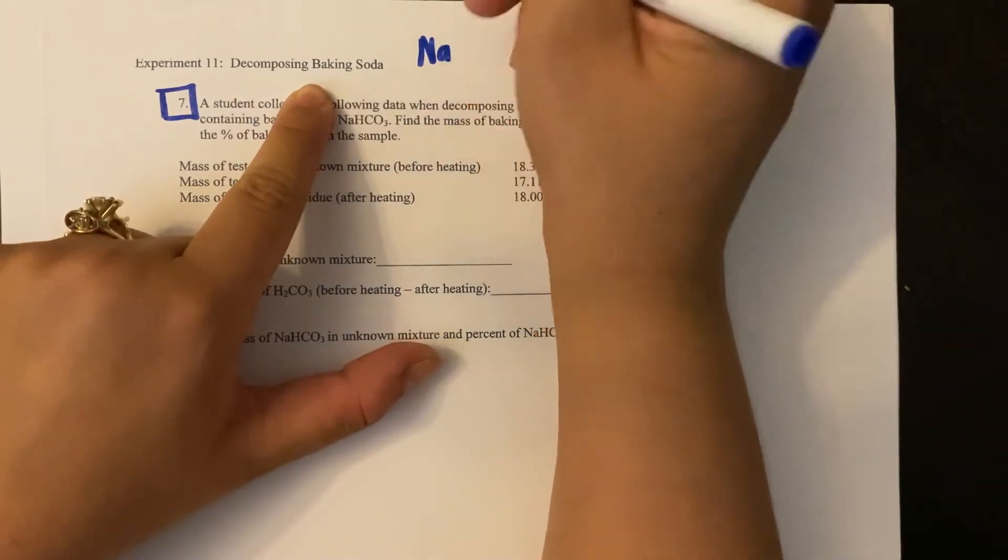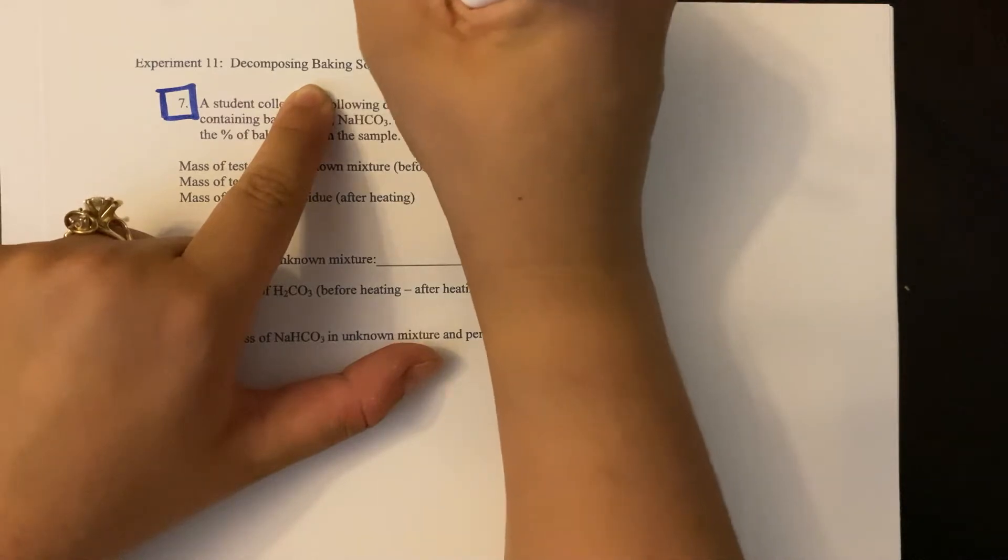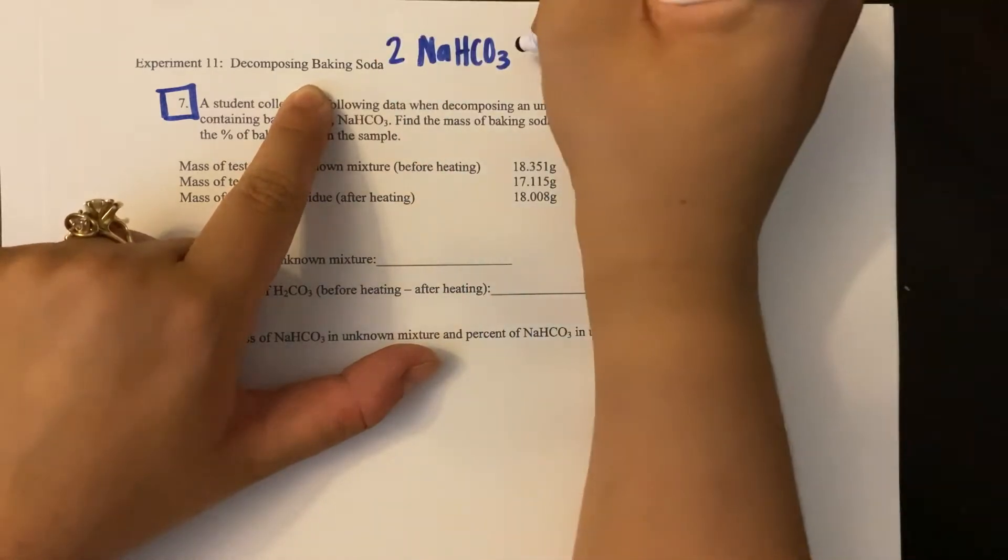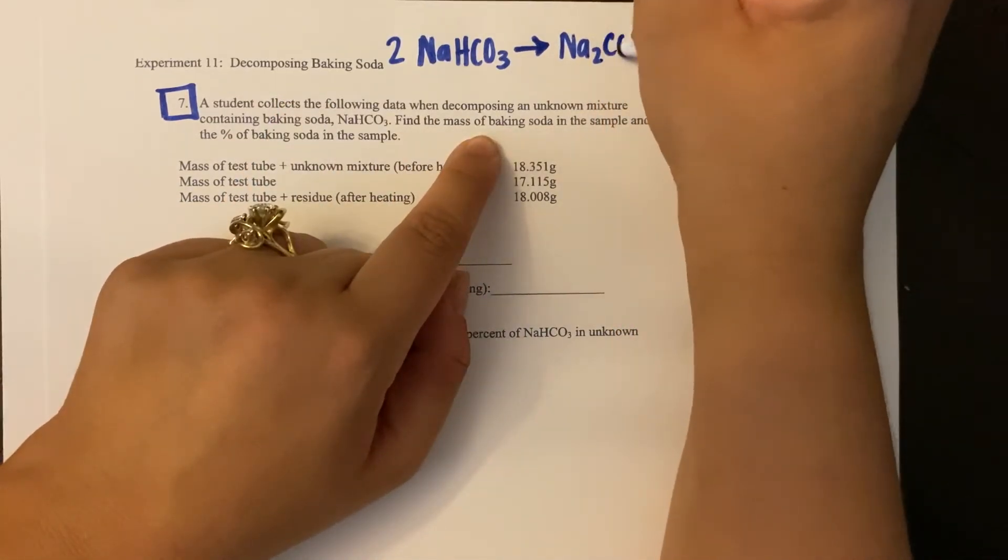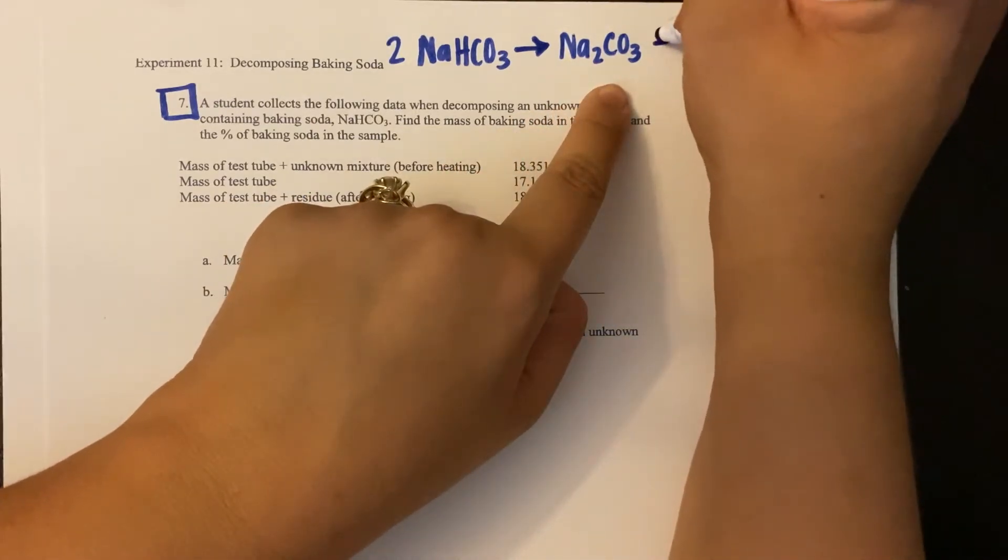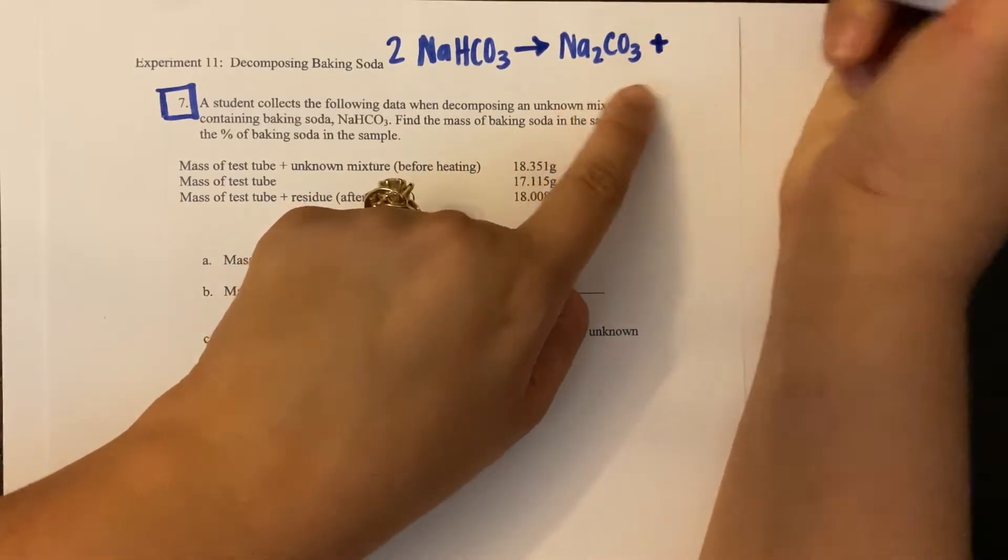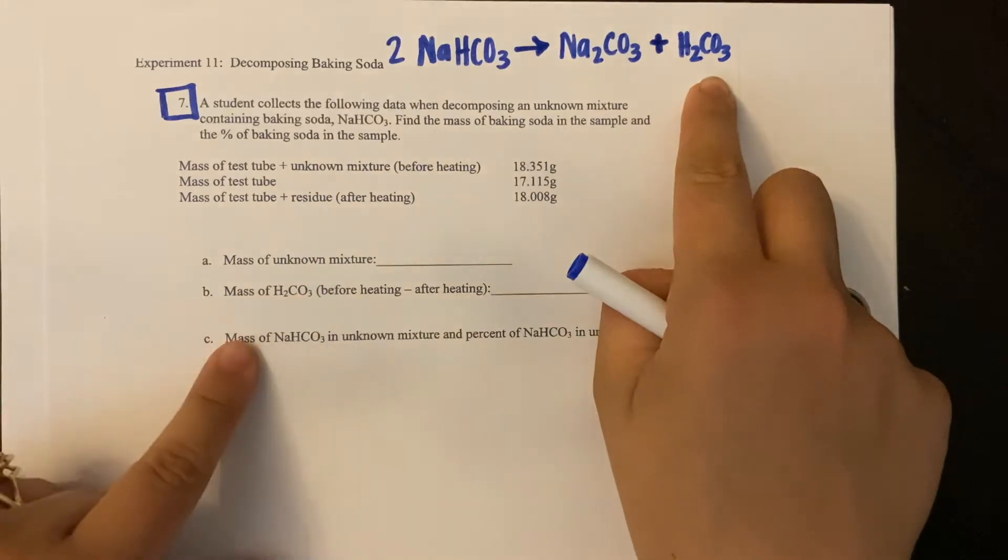So you have 2 NaHCO3 decomposing. It's breaking down into Na2CO3, sodium carbonate, and H2CO3, carbonic acid.